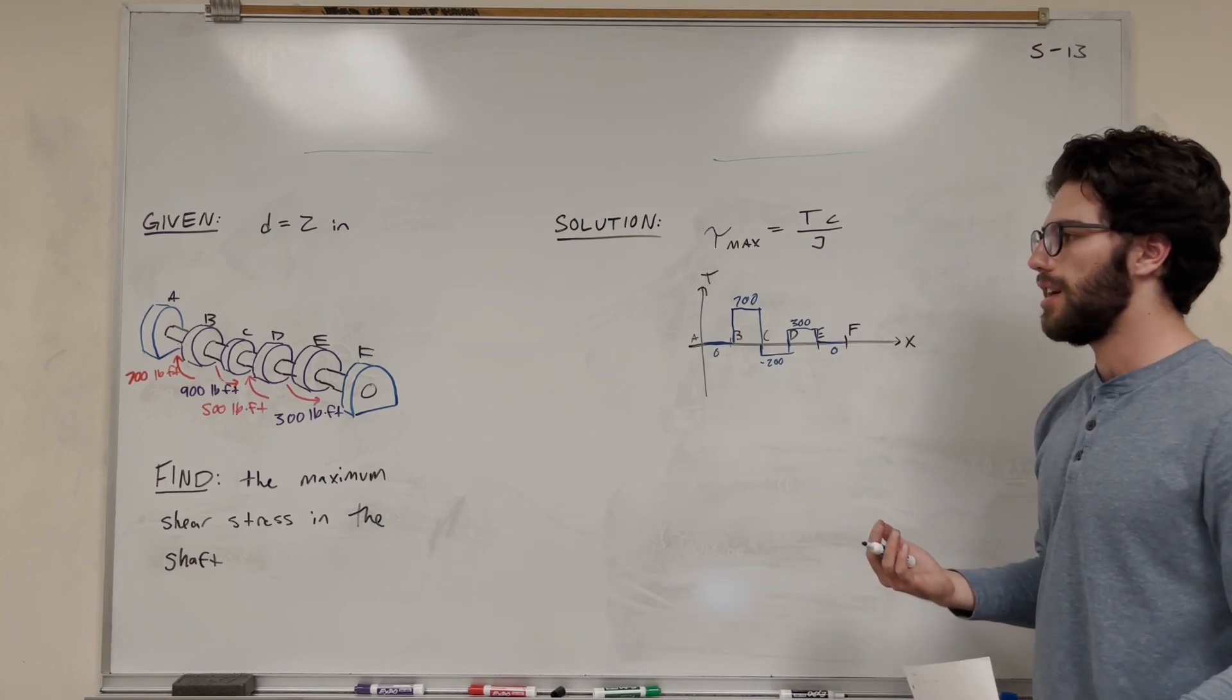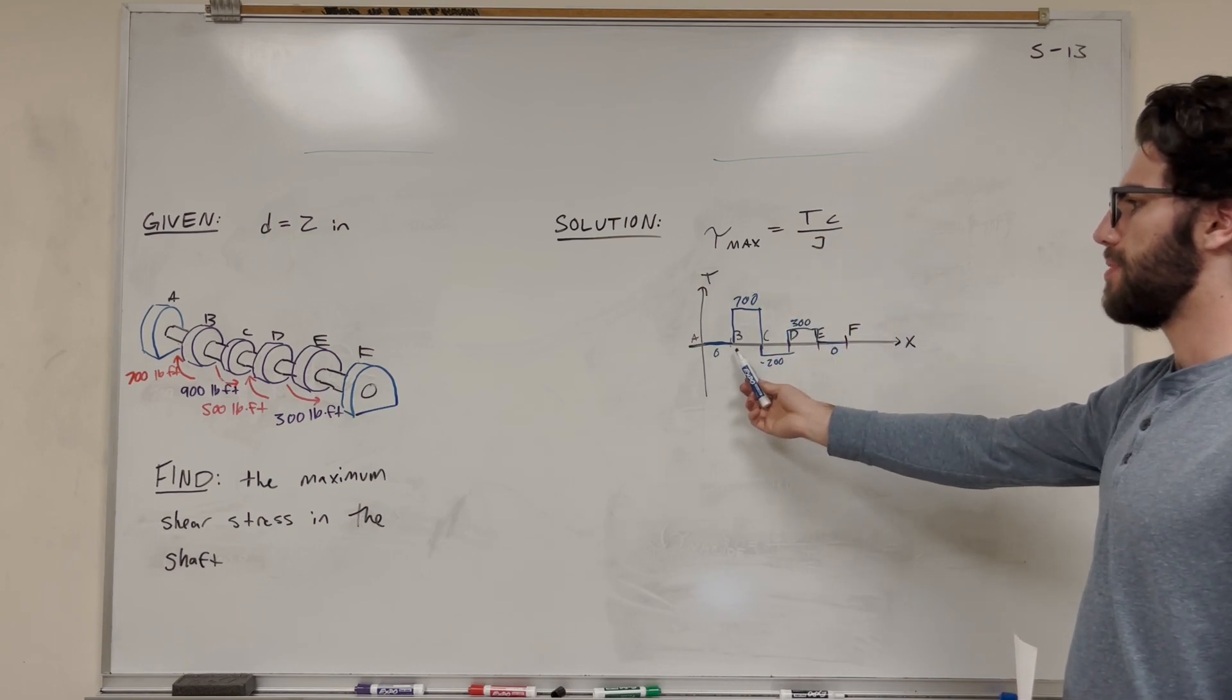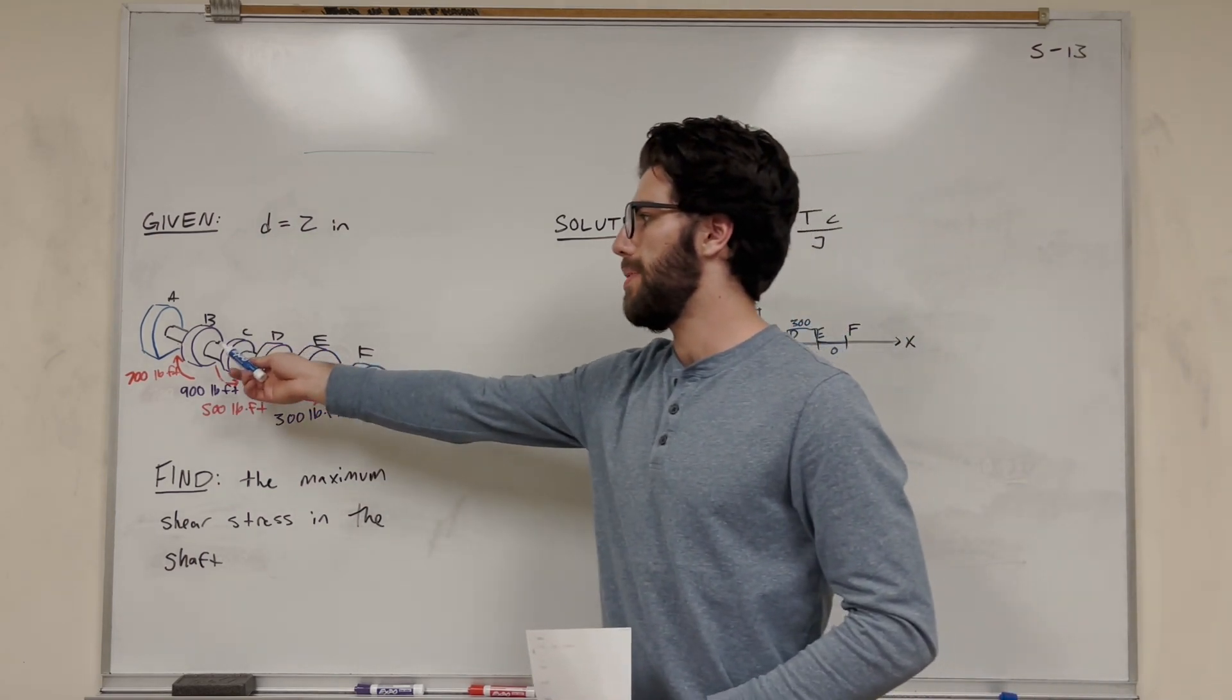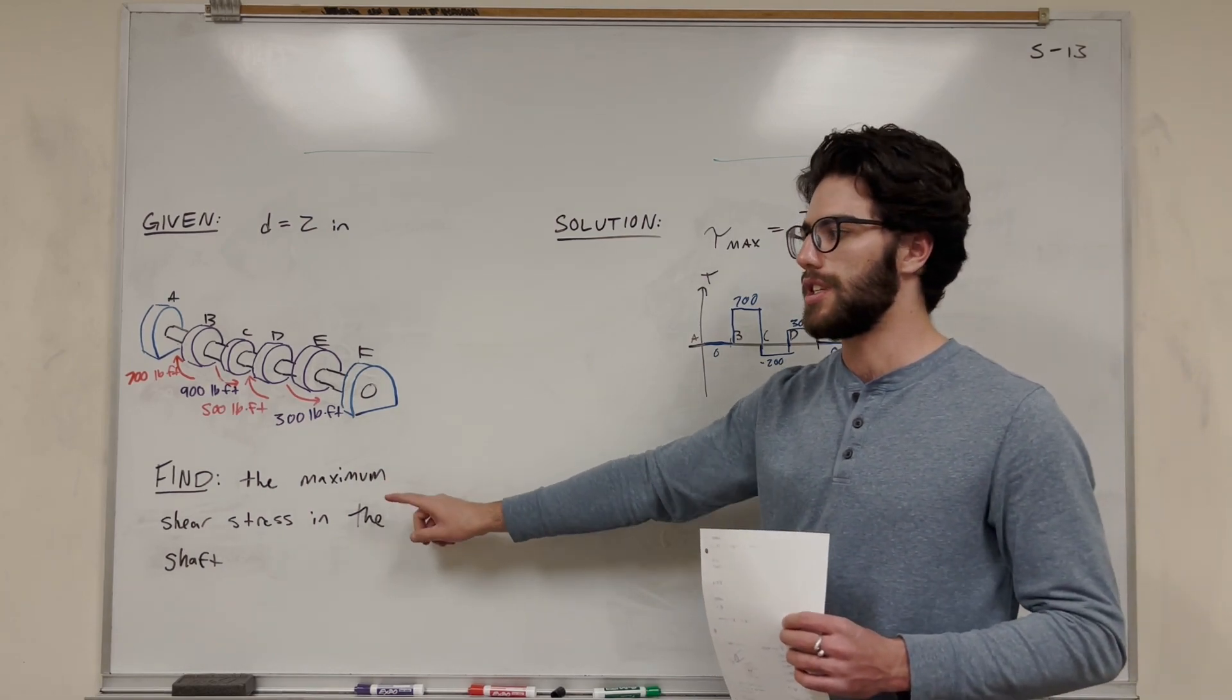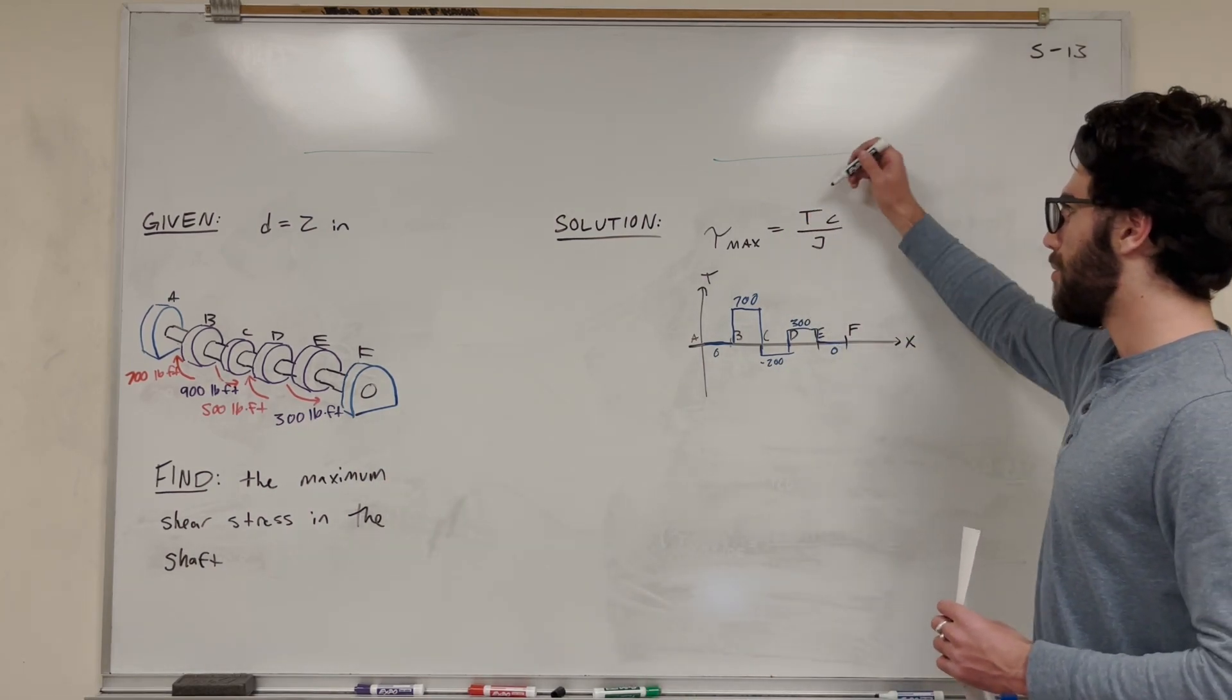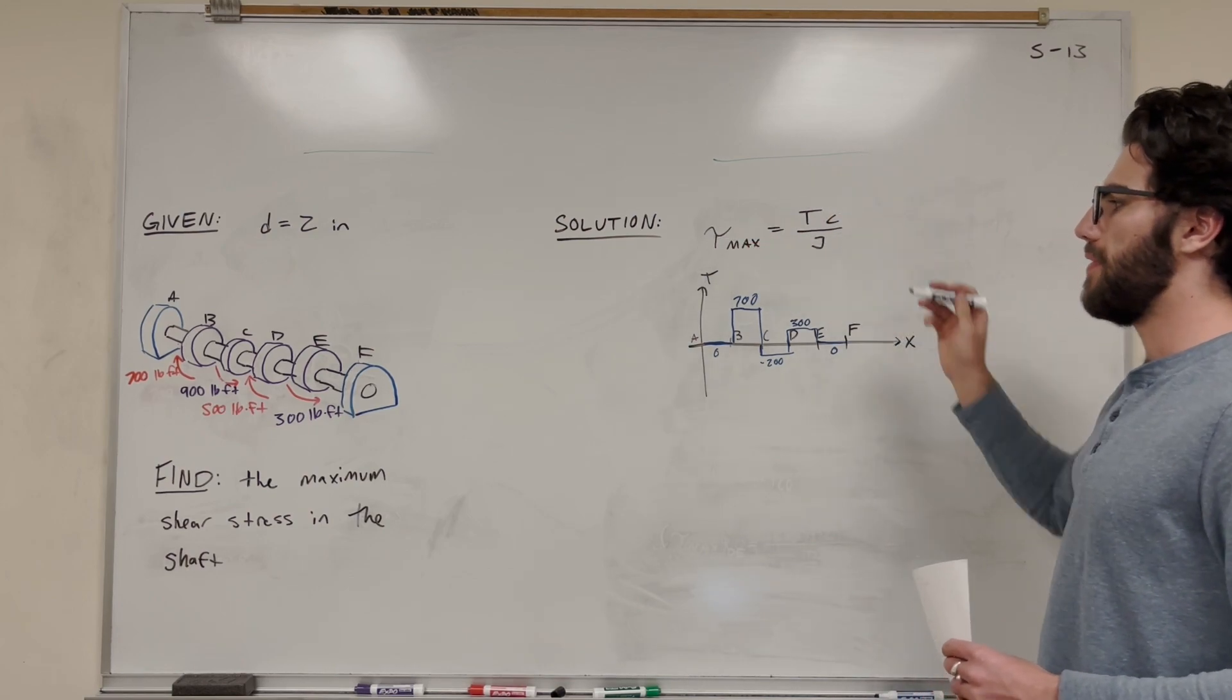Looking at our diagram we made here, you can see that the maximum torque happens at segment BC. So in between B and C is where the maximum torque is experienced, and that's where the maximum shear stress is going to be. If you know what torque is, that's going to be 700. Radius is just going to be half the diameter, so we need to find the polar moment of inertia.